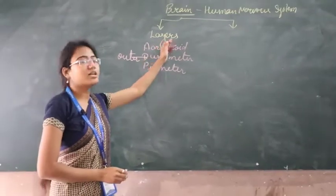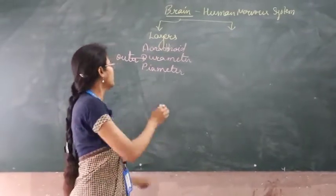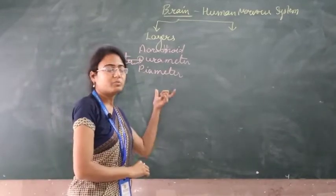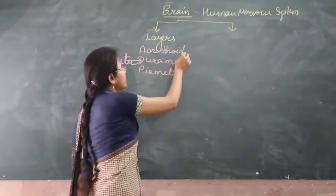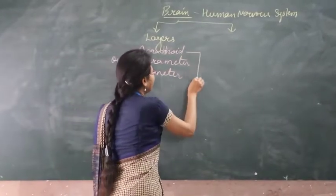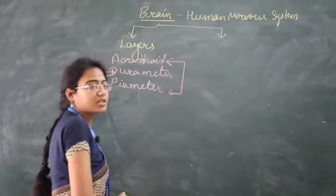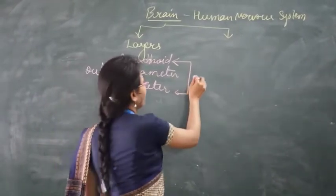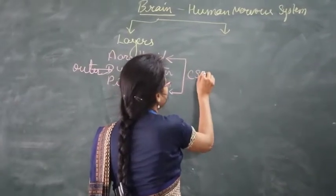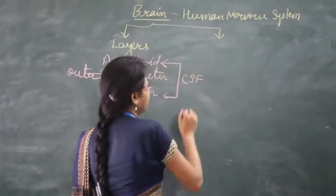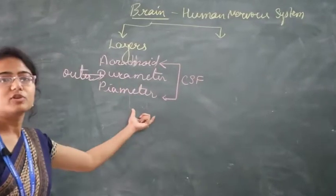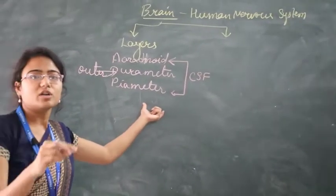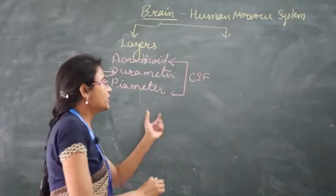These are the cranial layers of the brain. Duramater is the first protective covering of the brain. Between the piamater and arachnoid, a liquid flows that is known as cerebrospinal fluid. This cerebrospinal fluid is essential for circulating nutrients all over the brain.